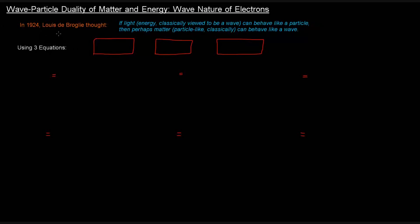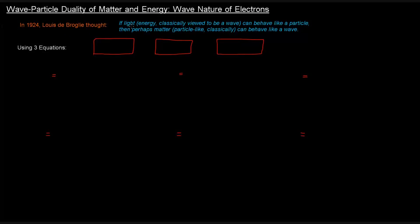In 1924, Louis de Broglie thought: if light, which is energy that was classically viewed to be a wave, can behave like a particle, then perhaps matter, which was classically viewed to be particle-like, can behave as a wave.